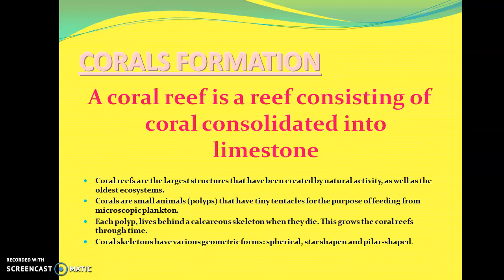Coral reefs form one of the most complex and intriguing ecosystems on Earth. These are large structures that are created naturally and are also one of the oldest ecosystems in the world. Corals are small animals often called polyps, and they have tiny tentacles for feeding from microscopic planktons. Each polyp lives behind a calcareous skeleton; when they die, this grows the reef throughout its lifetime. Coral reefs have different types of shapes, which include spherical, star shape, and pillar shape corals.